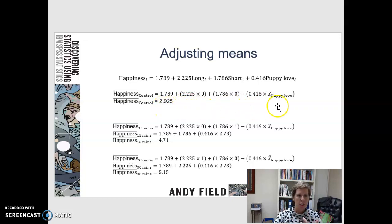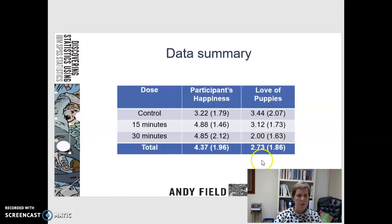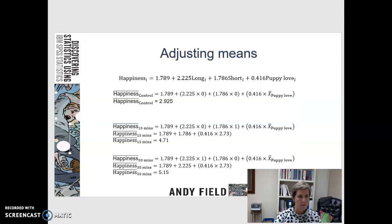Now in the book, it's a little confusing because he uses the value 2.73. So he times 0.416 times 2.73. That 2.73 comes from this average value of love of puppies. So hopefully that doesn't get too confusing when you're reading it.